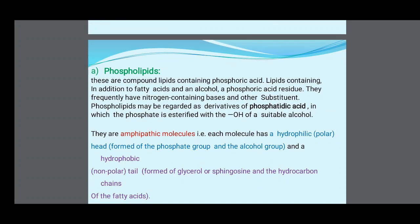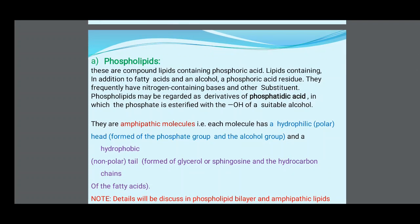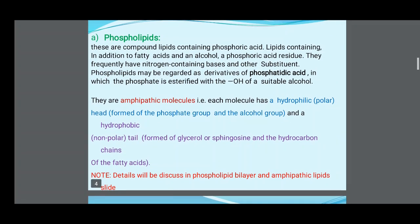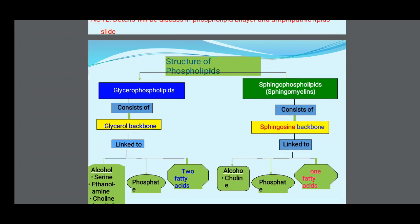Phospholipids are compound lipids containing phosphoric acid. They are regarded as derivatives of phosphatidic acid in which the phosphate is esterified with the OH of a suitable alcohol. They are amphipathic molecules — each molecule has a hydrophilic head formed by the phosphate group and alcohol group, and a hydrophobic non-polar tail formed by glycerol or sphingosine and the hydrocarbon chain of the fatty acids. They are further classified into glycerophospholipids and sphingophospholipids.